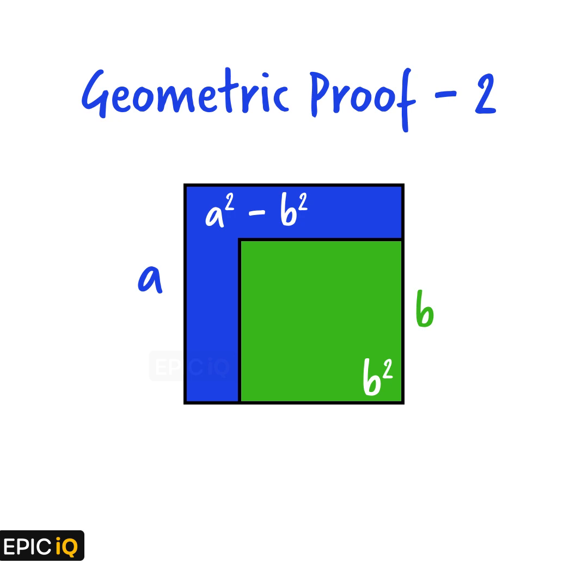Now, we split this blue region into two parts. The top region is a rectangle with sides a and a minus b. The left region is a rectangle with sides b and a minus b.